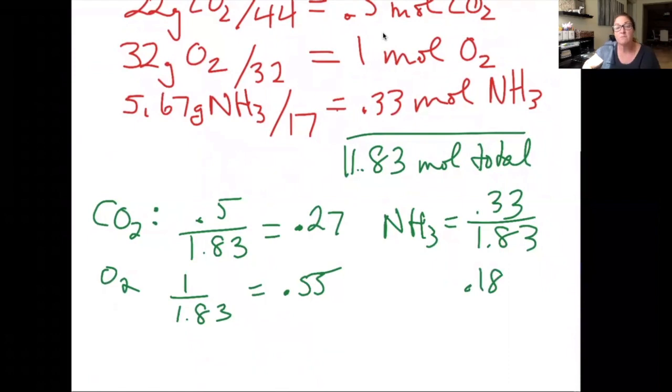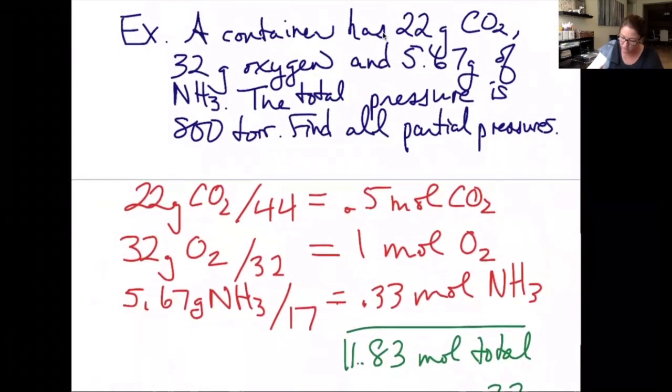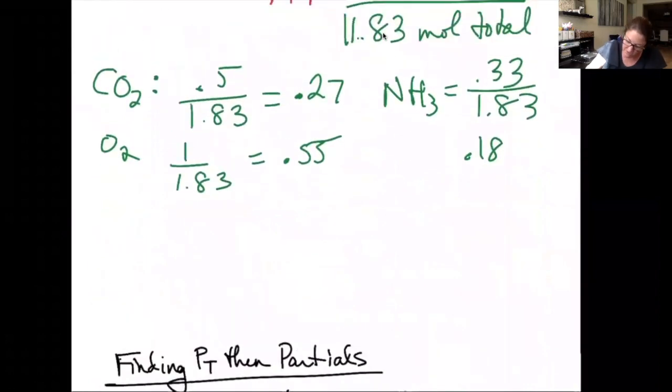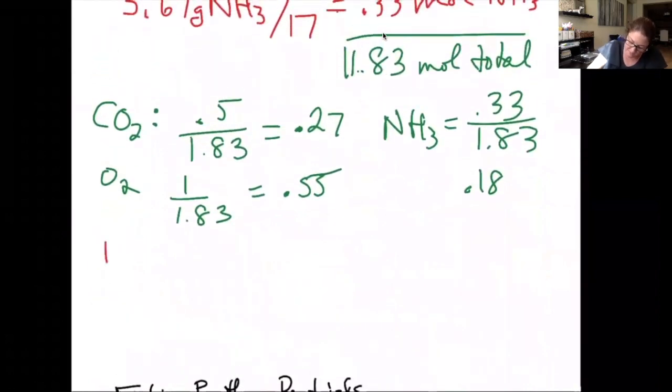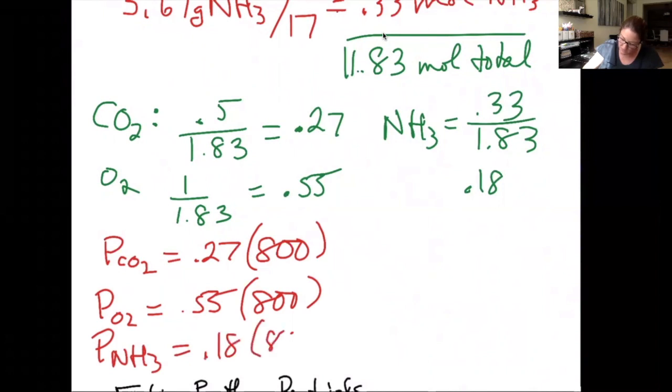I'm going to multiply those mole fractions times the total pressure. And we were told up here that the total pressure is 800 torr. So I'm going to use that to find the individual partial pressures. The partial pressure of CO2 is its mole fraction times total pressure. Partial pressure of O2 will be its mole fraction times total pressure. Partial pressure of NH3 will be its mole fraction times total pressure.